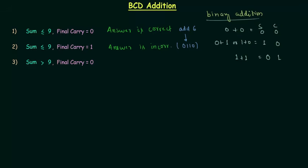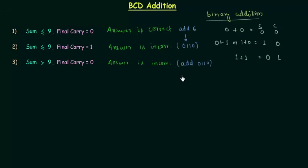In the third case, when sum is greater than 9 and final carry is equal to 0, again our answer is incorrect. And to correct it we have to add 6. Why we are adding 6 to correct our answers — I will explain by the help of one example.